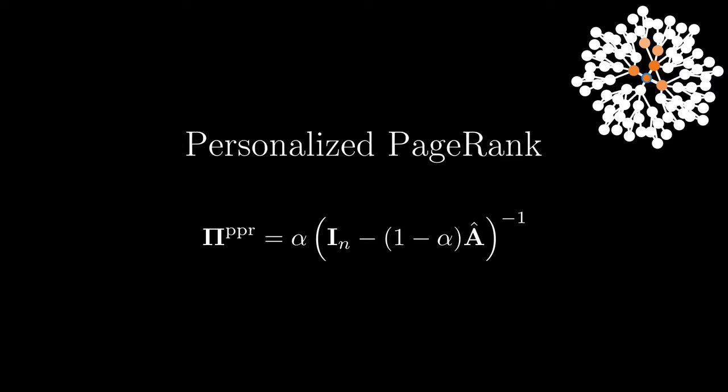We propose to find and weight the most important nodes by their personalized PageRank scores in a predict-then-propagate-style model. But this inverse is too expensive as well, so we circumvent it using two different methods.